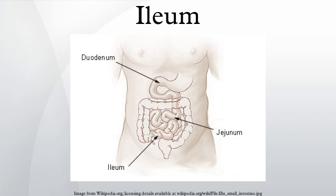The ileum follows the duodenum and jejunum and is separated from the cecum by the ileocecal valve. In humans, the ileum is about 2 to 4 meters long, and the pH is usually between 7 and 8. Ileum is derived from the Greek word ilene, meaning to twist up tightly.